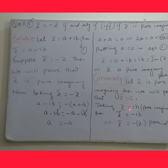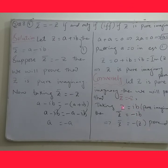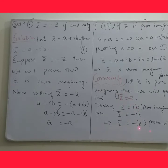Conversely, let z be pure imaginary. We take z equals iota b, because in a pure imaginary number we do not include the real part. Then z conjugate equals minus iota b. Substituting back using z equals iota b, we get z conjugate equals minus z. Thus z conjugate equals minus z is proved. This completes the proof that z conjugate equals minus z if and only if z is pure imaginary. Thank you students.